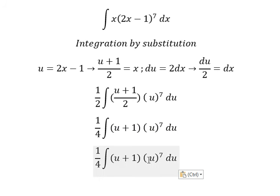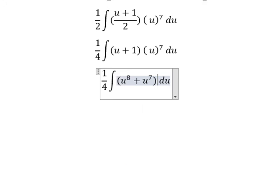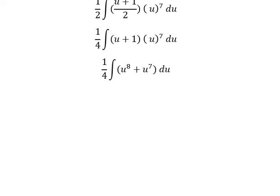Now u to the power of 7 multiplied by u plus 1, so we will have u to the power of 8 plus u to the power of 7. And now we have the formula.